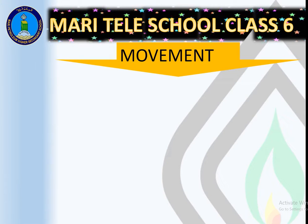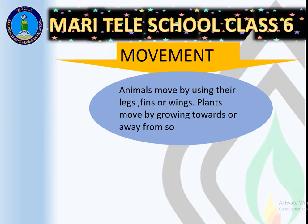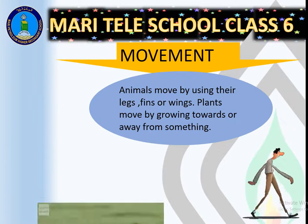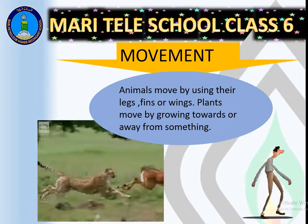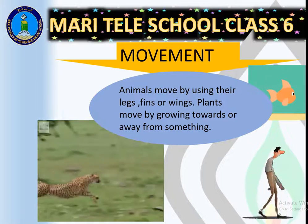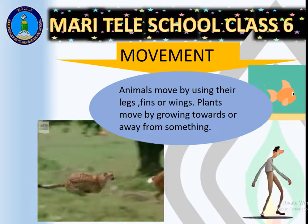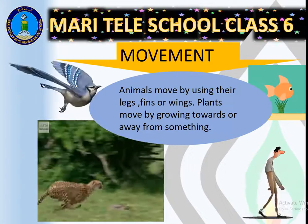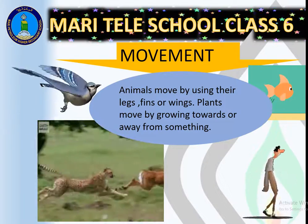Number one: movement. Animals move by using their legs, fins, or wings. Plants move by going towards or away from something. The key difference is that animals move from one place to another — there is locomotion — but plants do not move from one place to another, except for a few aquatic plants. However, parts of plants such as roots, shoots, or flowers do move.